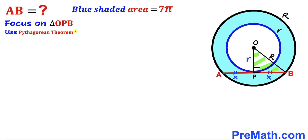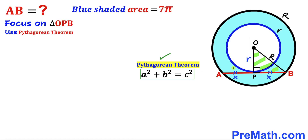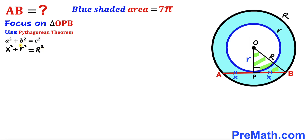Now we are going to apply the Pythagorean theorem to triangle OPB. The Pythagorean theorem states a² + b² = c². In our case the hypotenuse is R, and the two legs are r and x. So we get x² + r² = R². Moving r² to the other side gives us x² = R² − r². I will label this as Equation 1.